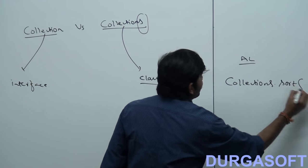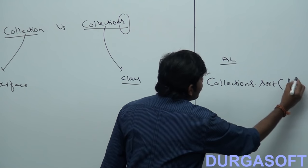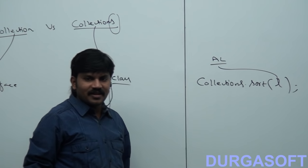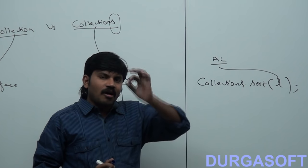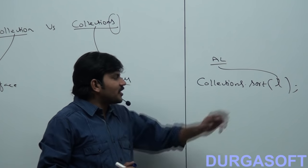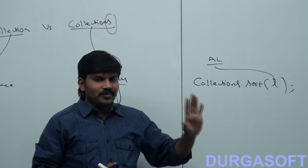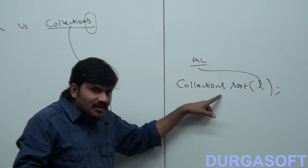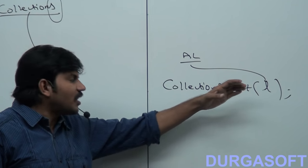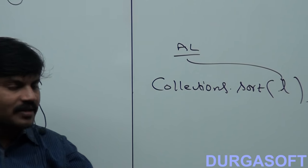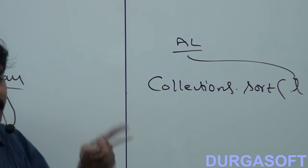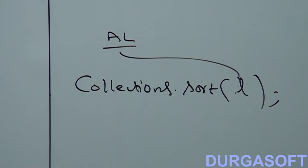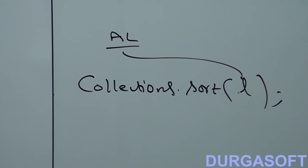Collections — that sort method you can call and pass the ArrayList object. Are you getting? Automatically, all elements present in the ArrayList, by default, will be sorted. Are you getting? So the Collections class defines the sort method, like sorting, searching, shuffling. Collections class defines several utility methods for collection objects.